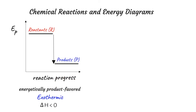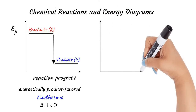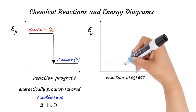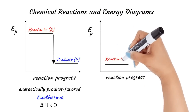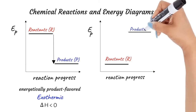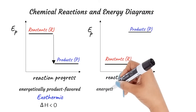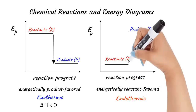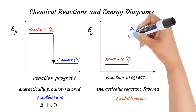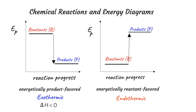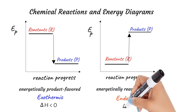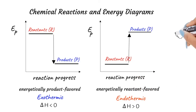On the other hand, if the products are less energetically stable than the reactants — in other words, reactants have lower potential energy than products — then the reaction is energetically reactant favored. These reactions are called endothermic reactions, as energy is absorbed when you go from low potential energy reactants to high potential energy products. Thus, endothermic reactions will have a positive delta H.